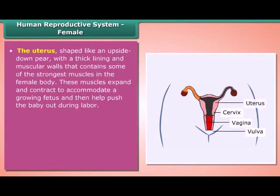The uterus is shaped like an upside-down pear, with a thick lining and muscular walls that contain some of the strongest muscles in the female body. These muscles expand and contract to accommodate a growing fetus and then help push the baby out during labor.